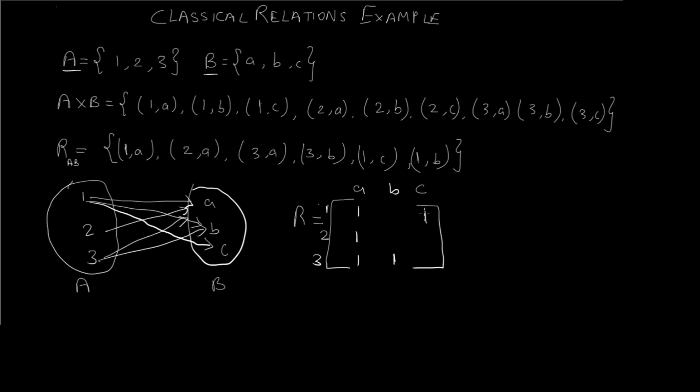Then we have (1,c) and (1,b). Now remaining we have to represent them by 0 because there is no relation. And this is how we get a matrix of the relation. The 1 denotes there is a relation and 0 denotes that it is not related to each other. So this is just the theoretical aspect of classical relations.